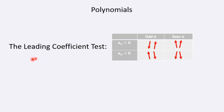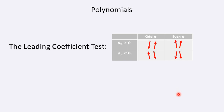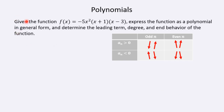Here's a summary — this is actually called the leading coefficient test. It says: if n is odd and you have a positive leading coefficient, the end behaviors go up on the right and down on the left. If n is odd and you have a negative leading coefficient, the end behaviors are reversed. If n is even and you have a positive leading coefficient, both ends go up. These are the end behaviors summarized. Now we can take on a problem: given f of x equals negative 5x squared times (x plus 1) times (x minus 3), express the function as a polynomial in general form and determine the leading term, degree, and end behaviors.